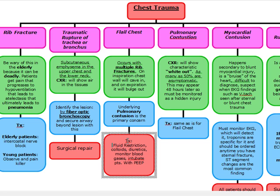Our first-line treatment for flail chest is fluid restriction. After fluid restriction, we're going to use colloids — either plasma or albumin. We're not going to use crystalloids such as regular IV fluids. We're going to use colloids and diuretics. To recognize flail chest: a patient with multiple rib fractures and paradoxical breathing where on inspiration the chest wall caves in and on expiration it bulges out. Our underlying concern is the pulmonary contusion, and we restrict fluids, use diuretics, and use colloids such as plasma while avoiding crystalloids like regular IV fluid.